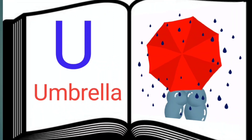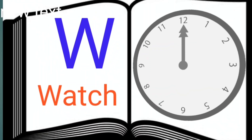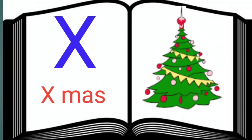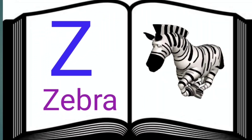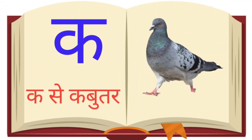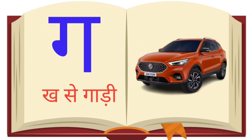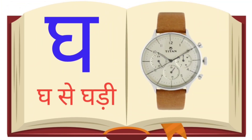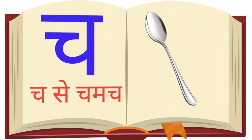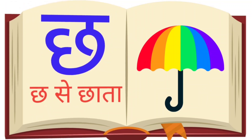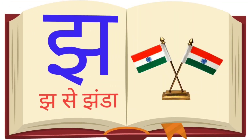U. U for umbrella. V. V for van. W. W for whale. X. X for xylophone. Y. Y for yacht. Z. Z for zebra.